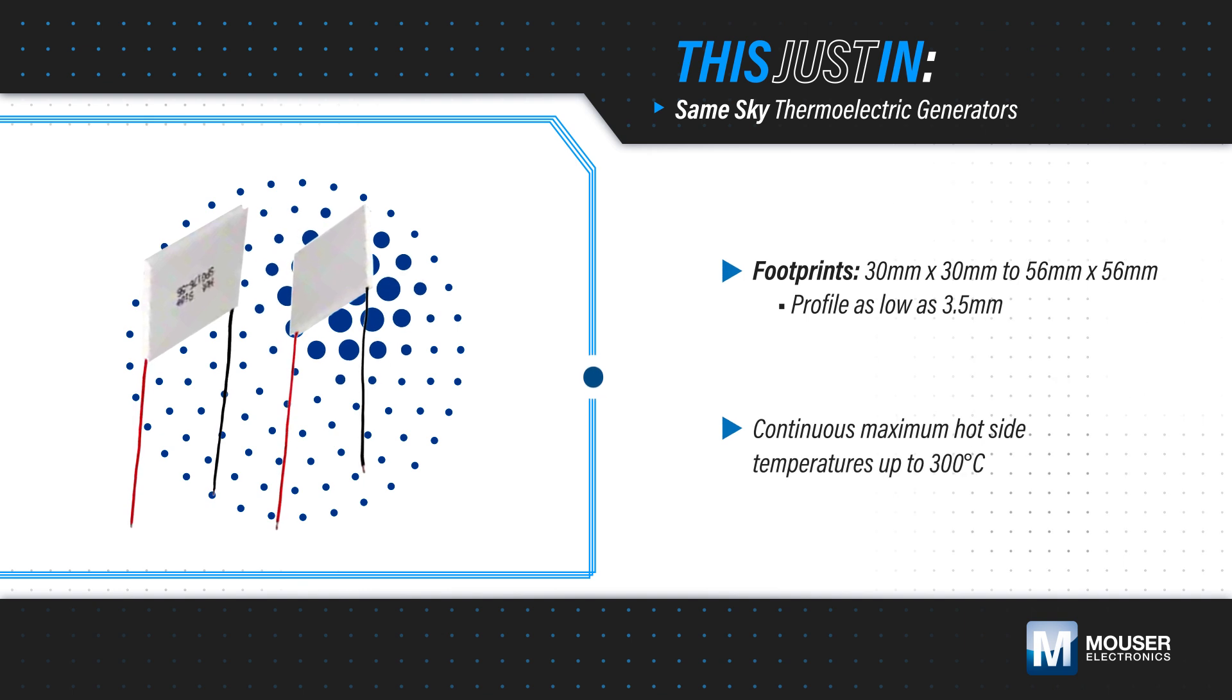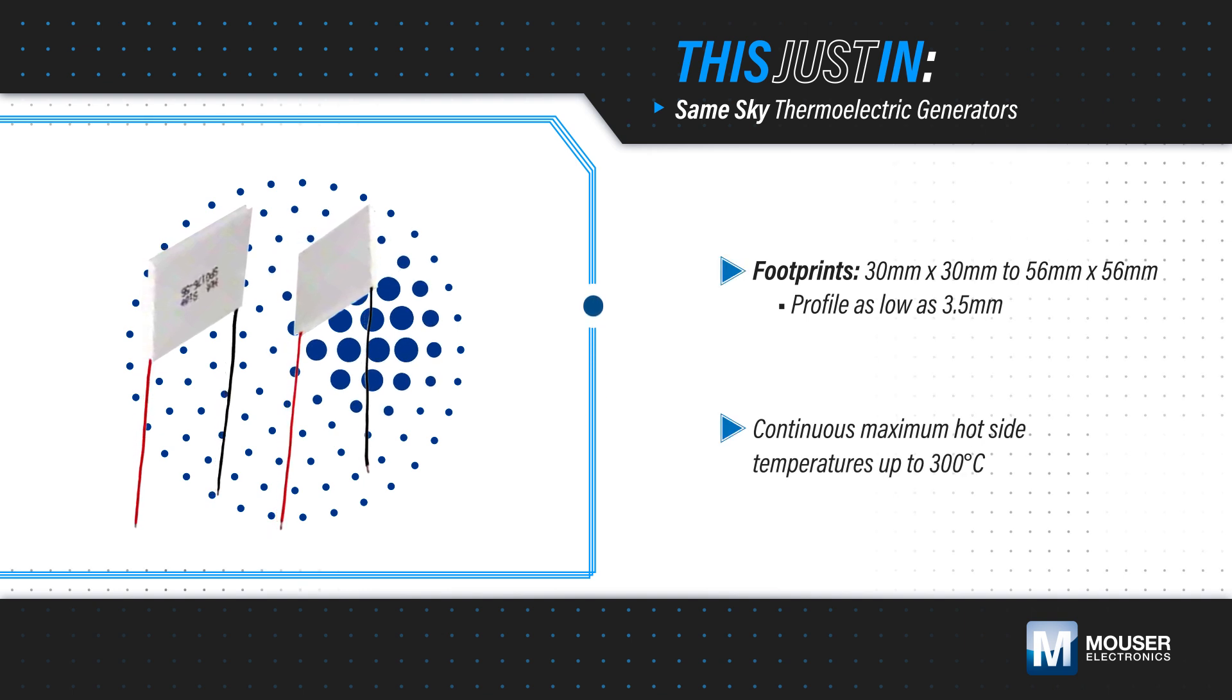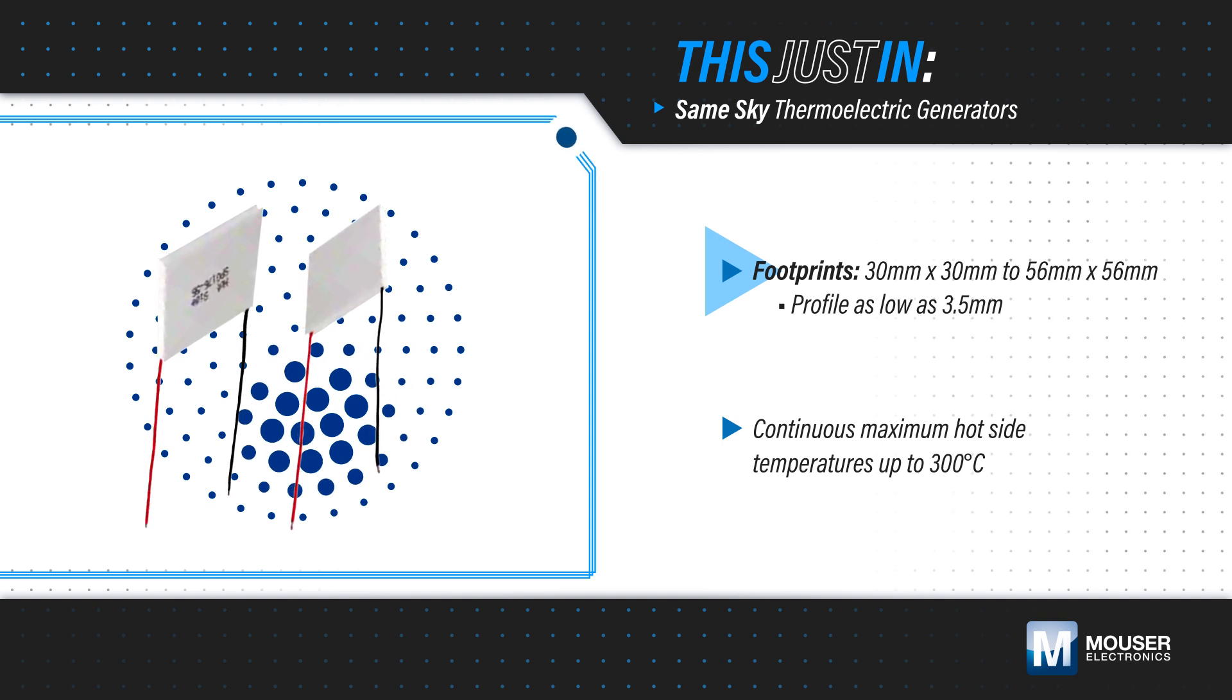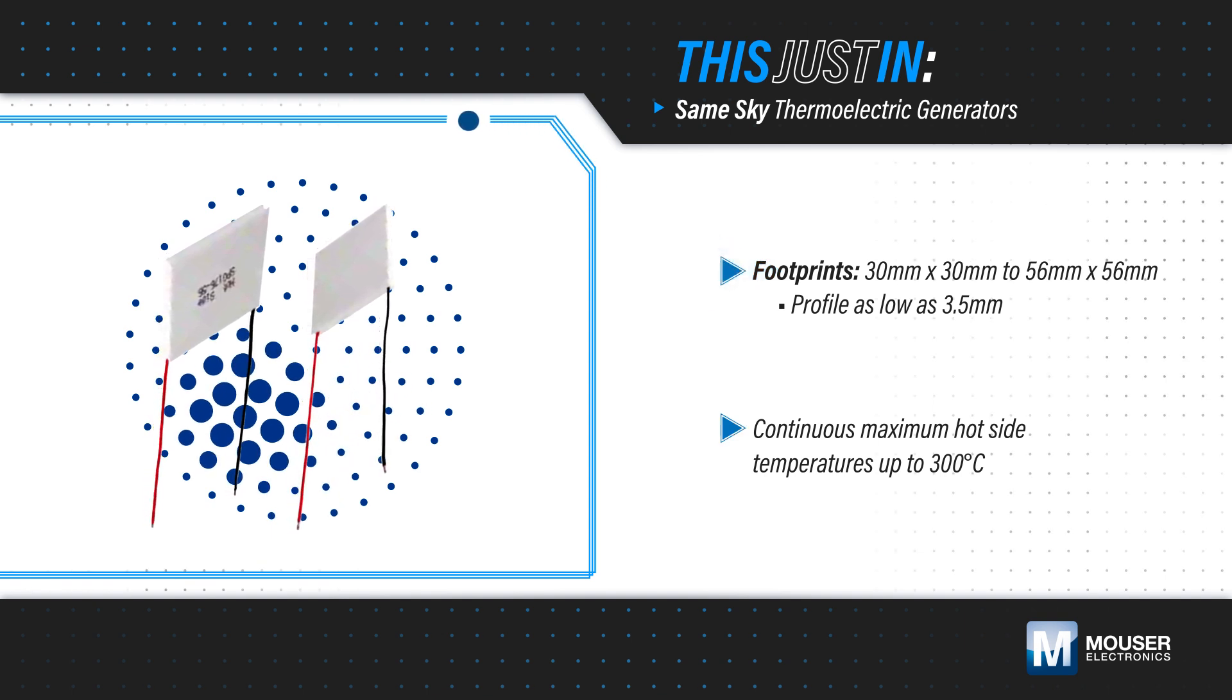Same Sky TEGs are a scalable, compact, and low-profile solution, with footprints from 30 by 30 millimeters to 56 by 56 millimeters, and heights from 3.5 to 5.55 millimeters.